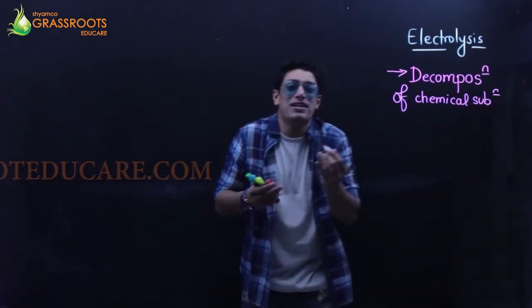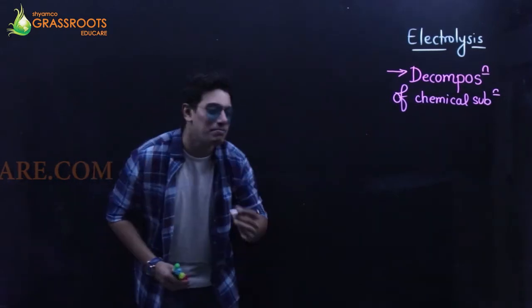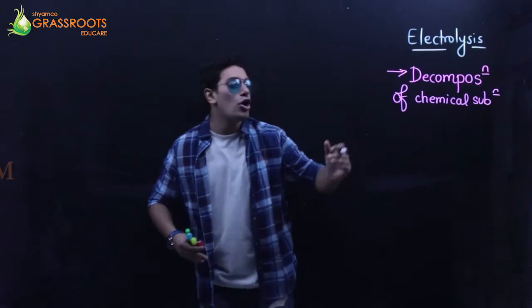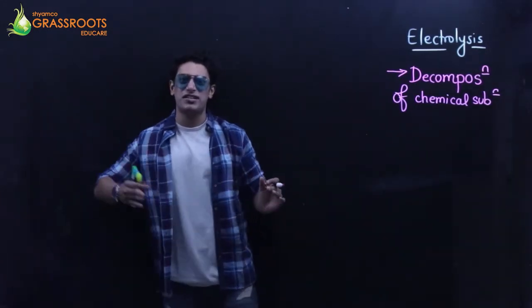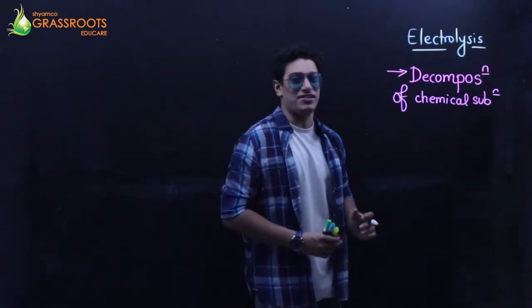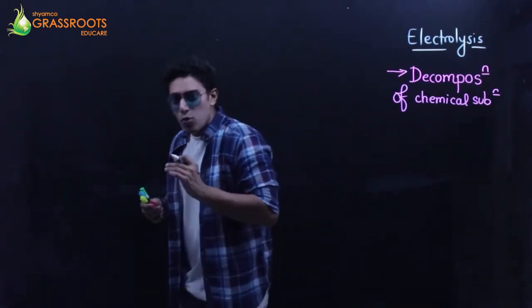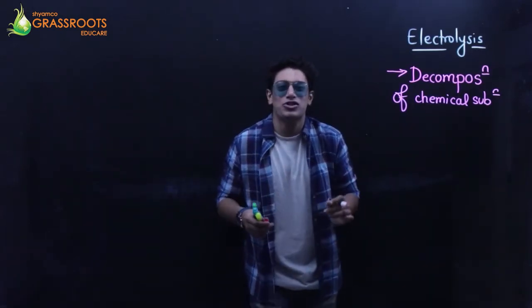Let's say there is some chemical substance, copper sulfate aqueous. It is a decomposition of a chemical substance which is either in an aqueous state or molten state, not solid state. When will that decomposition take place? When there is a passage of current.